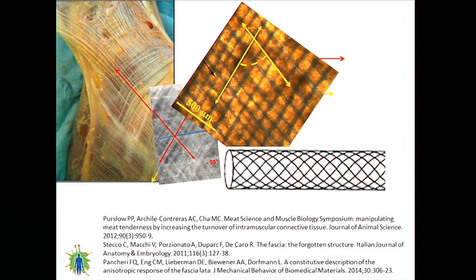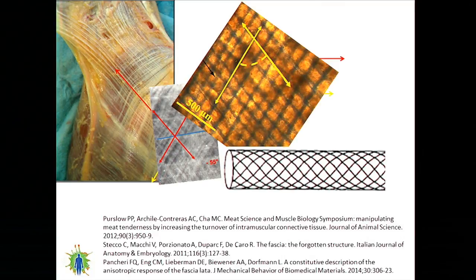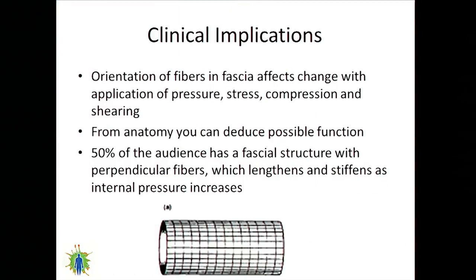Here's a good example. On the left is the external fascia in a human elbow; here is fascia in the neck of a cow; here is the fascia lata of a goat; and here's your garden hose. The fibers within the fascia are all at the same angle — 55 degrees. This is a structure designed to take pressure on the inside without getting bigger and to stay flexible. That gives us a clue about the fascia lata, which covers the outside of the leg: it needs to take pressure on the inside and stay flexible. The orientation of fibers in fascia affects how it changes with pressure, stress, compression, and shearing.